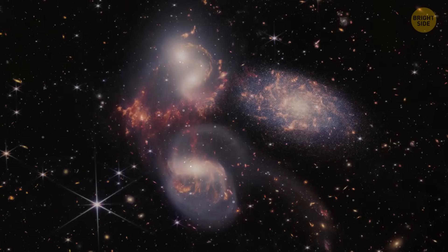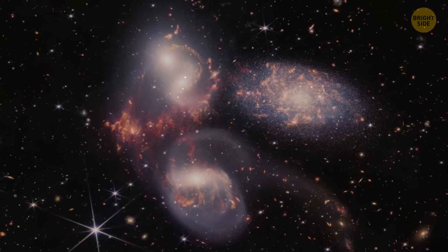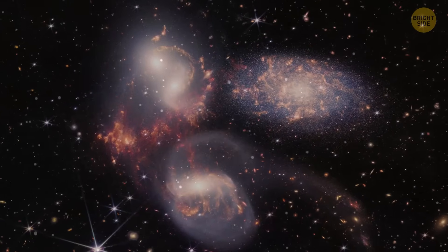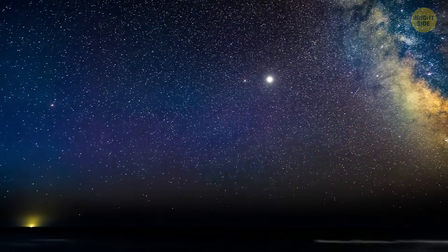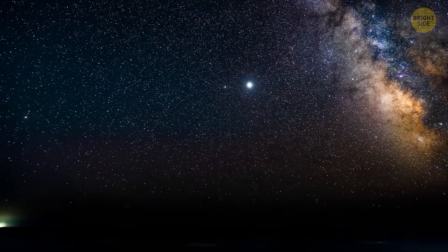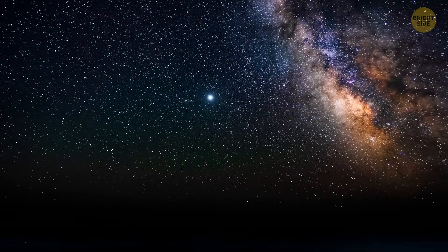Scientists think dark matter is what gives galaxies their shape and holds everything together like cosmic glue. Without it, the universe would look totally different. It would be totally amazing to find out that this theory is true. But since Ice Cube and Auger haven't caught the same thing, that really limits the possibilities.